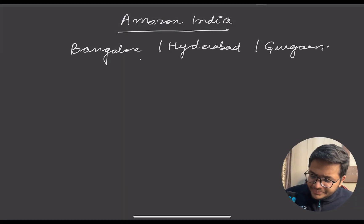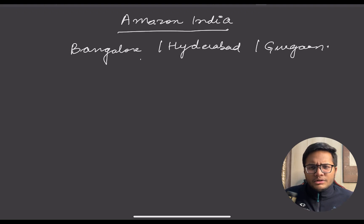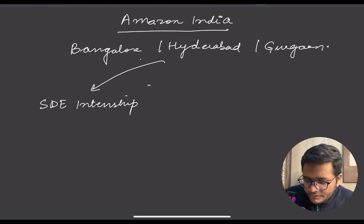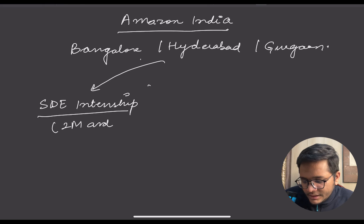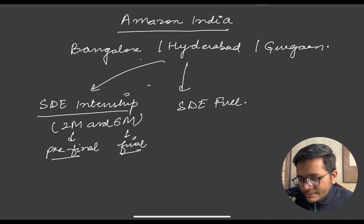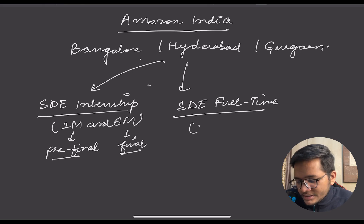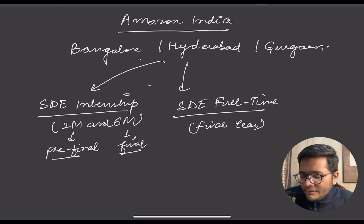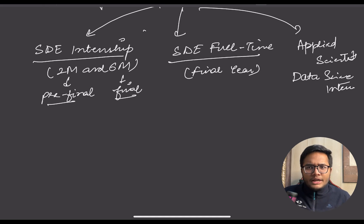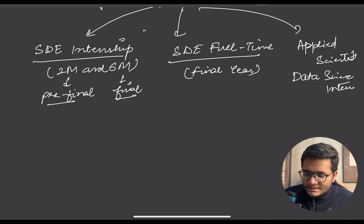Amazon has its offices in India in Bangalore, Hyderabad, Gurugram, and Chennai, and they hire for multiple different roles. They hire for SDE internship — generally two months for pre-final year students and six months for final year students. They also hire for SDE full-time for fresh grads or final year students, as well as Applied Scientist internship and full-time, Data Scientist internship and full-time. We'll majorly talk about the SDE part.